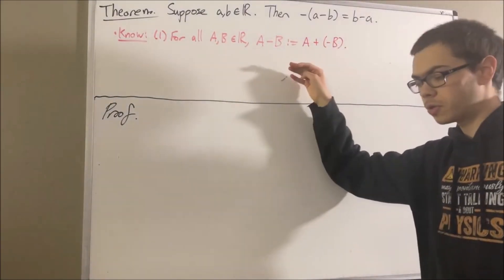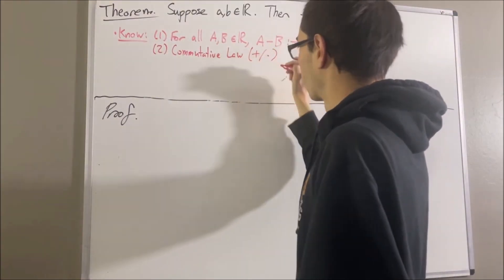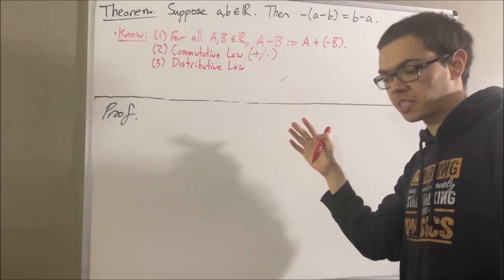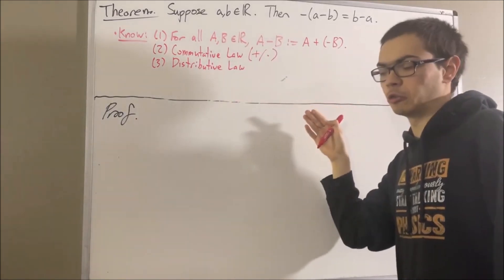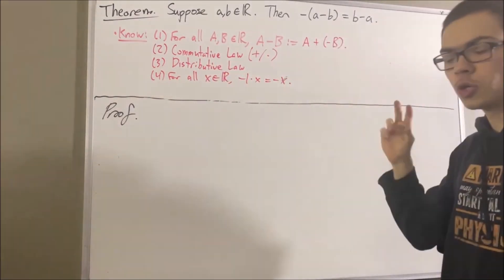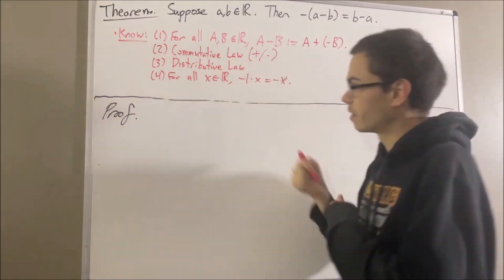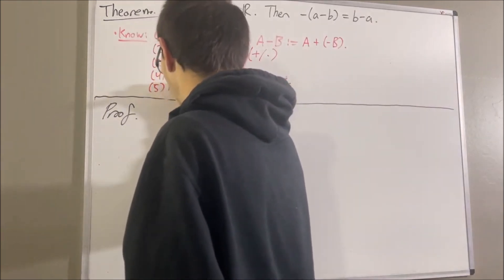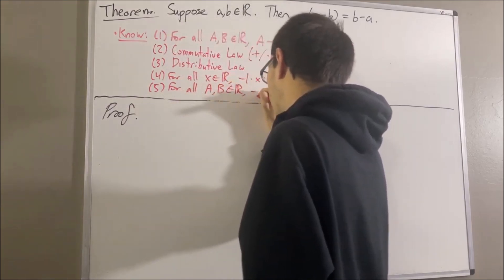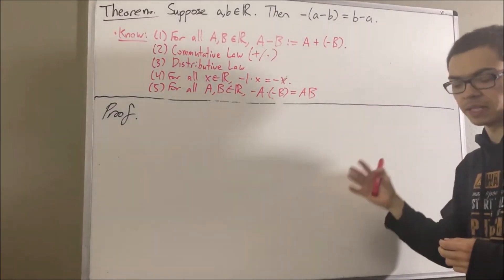Now, from the field properties of the real numbers, some facts we're going to rely on include the commutative law, the third being the distributive law, the fourth being, for every real number x, negative 1 times x is equal to the negative of x. The fifth being, for every two real numbers A and B, the negative of A times the negative B is equal to A times B, and the sixth being, for every real number x, 1 times x is equal to x.